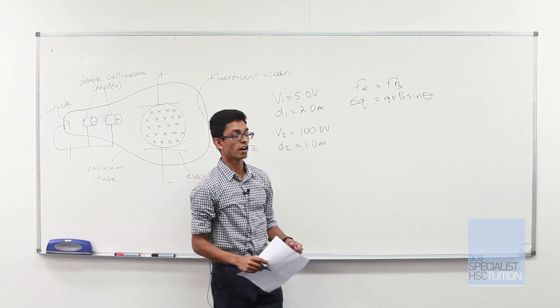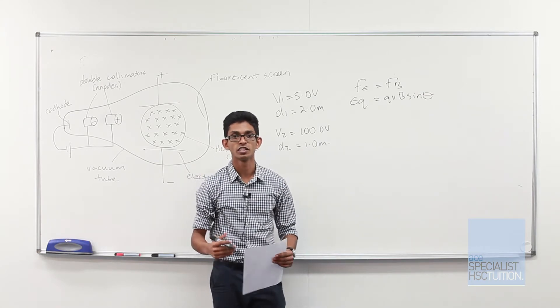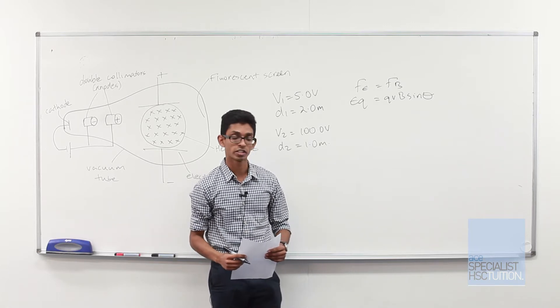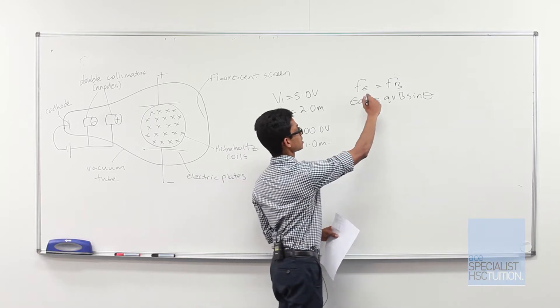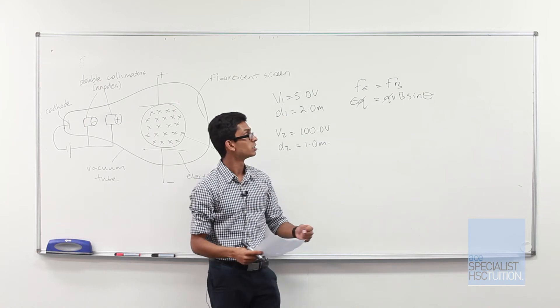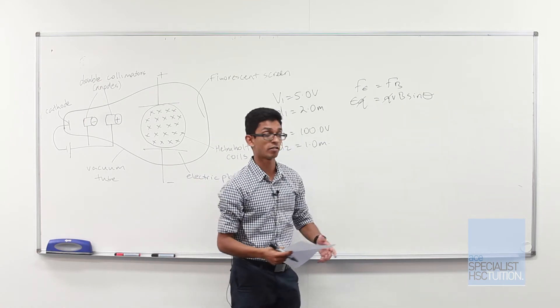So now we know that our force due to our electric field is equal to EQ, and our force due to our magnetic field is QVB sin theta, straight out of our data sheet. We can cancel out the Qs, and sub in E equals V on D to rearrange the equation to make B our subject. So let's do that right now.